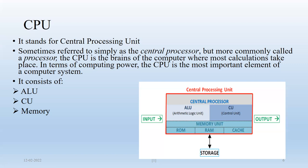Basically, a CPU consists of the ALU (mathematical and logical unit), control unit, and memory. We enter data to the system through input devices, and on that data, processing takes place and some operations are performed by the CPU.